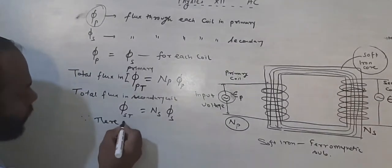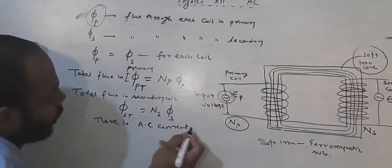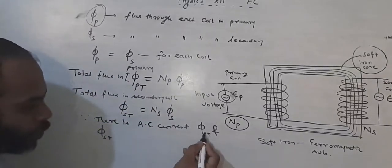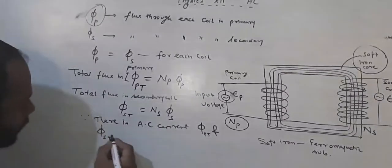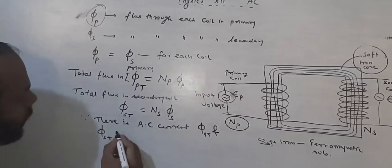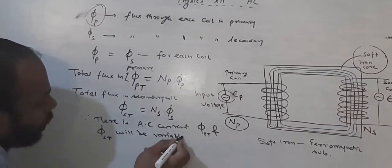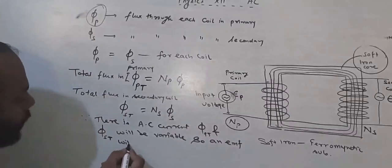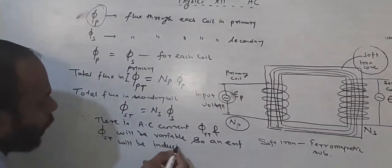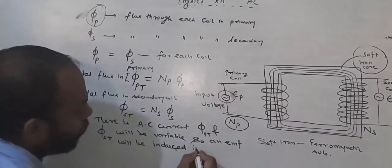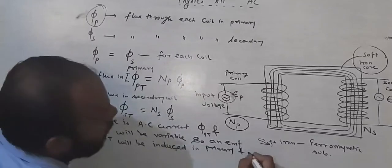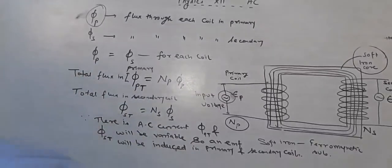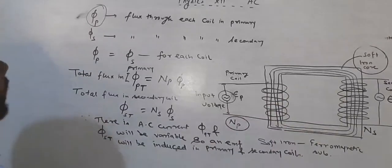Since there is AC current, phi_PT and phi_ST — total primary flux and total secondary flux — will be variable. So an EMF will be induced in both the primary and secondary coils.